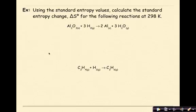Let's do a bunch of examples to remind ourselves how this works. Using the standard entropy values that are found at the back of your textbook, calculate the standard entropy change, delta S naught, for the following reactions at 298K. So here's my chemical reaction.